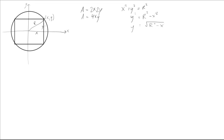Area can't be negative in this situation, so y will just be positive. Now we can rearrange the area equation for the square: area equals 4x times y, and y is the square root of r squared minus x squared.